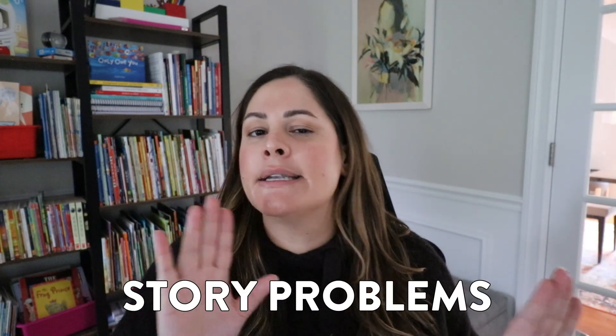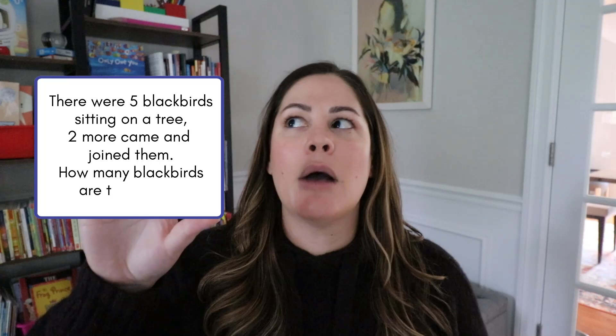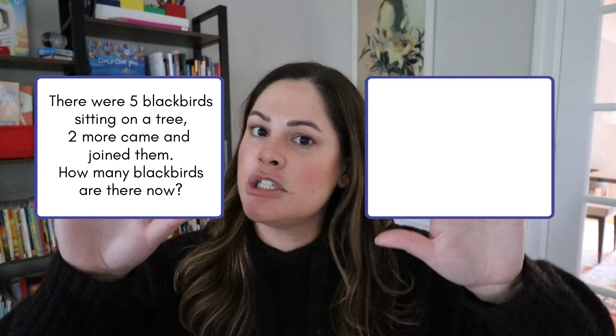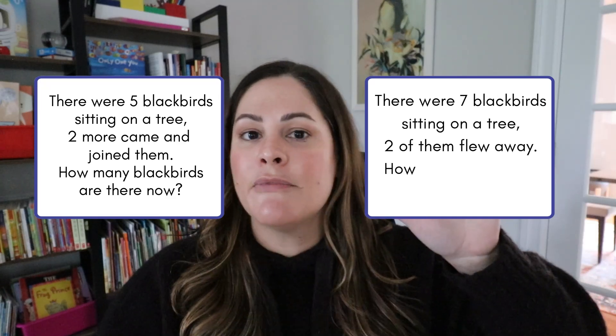One last strategy for teaching students the relationship between addition and subtraction is to give them similar story problems. For example, I might have one story problem that says: there were five blackbirds sitting on a tree, two more came and joined them — how many blackbirds are there now? That's an addition joining problem. Right next to it I would have another story problem: there were seven blackbirds sitting on a tree, two of them flew away — how many blackbirds were left? By doing this, students start to realize: we have two plus five equals seven here, and now we have seven and we know some are leaving.